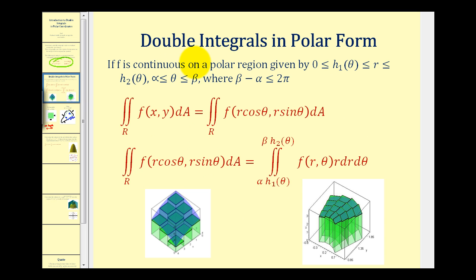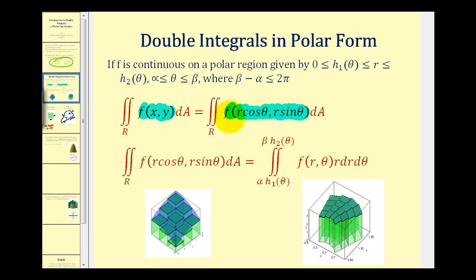If f of x is continuous on a polar region as defined, then we can rewrite a double integral in rectangular form into polar form. Our function f(x, y) is converted into a polar equation by replacing x with r·cosθ and y with r·sinθ. Sometimes the function is written in this converted form to represent polar form, and sometimes it's just written as f(r, θ).